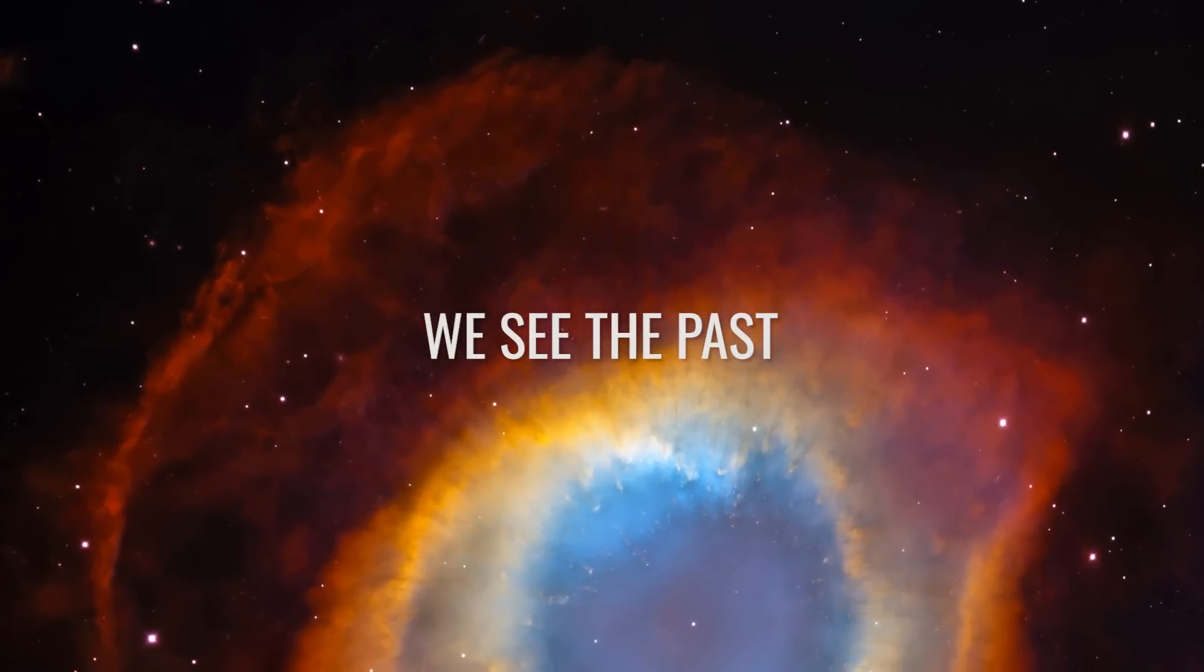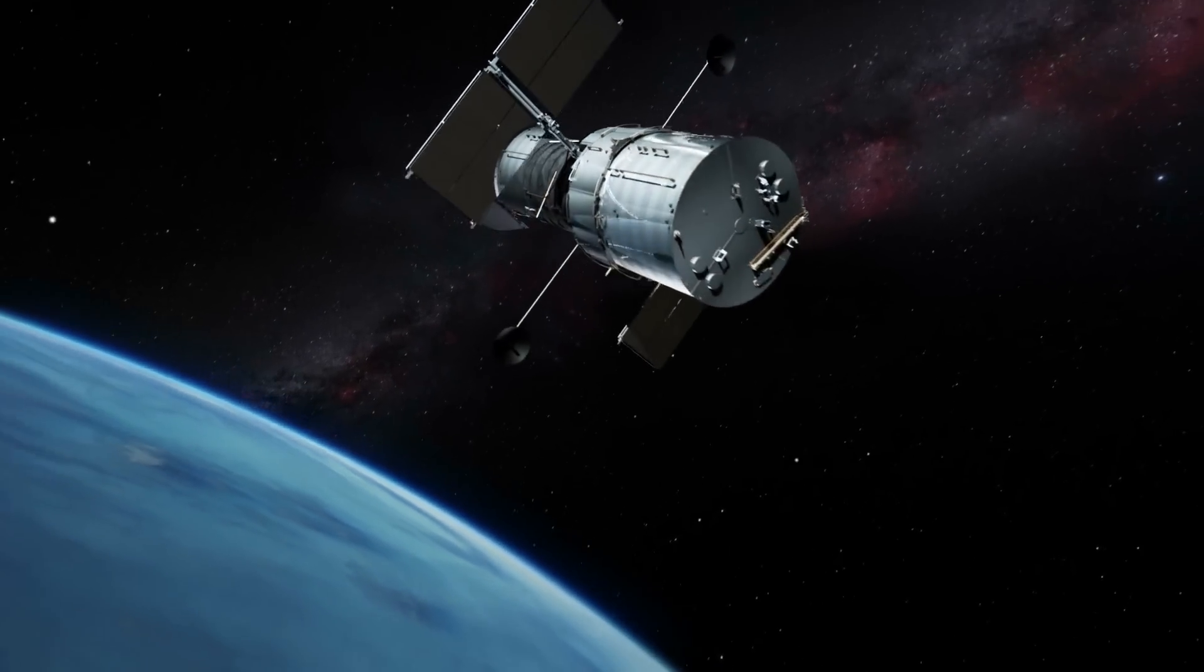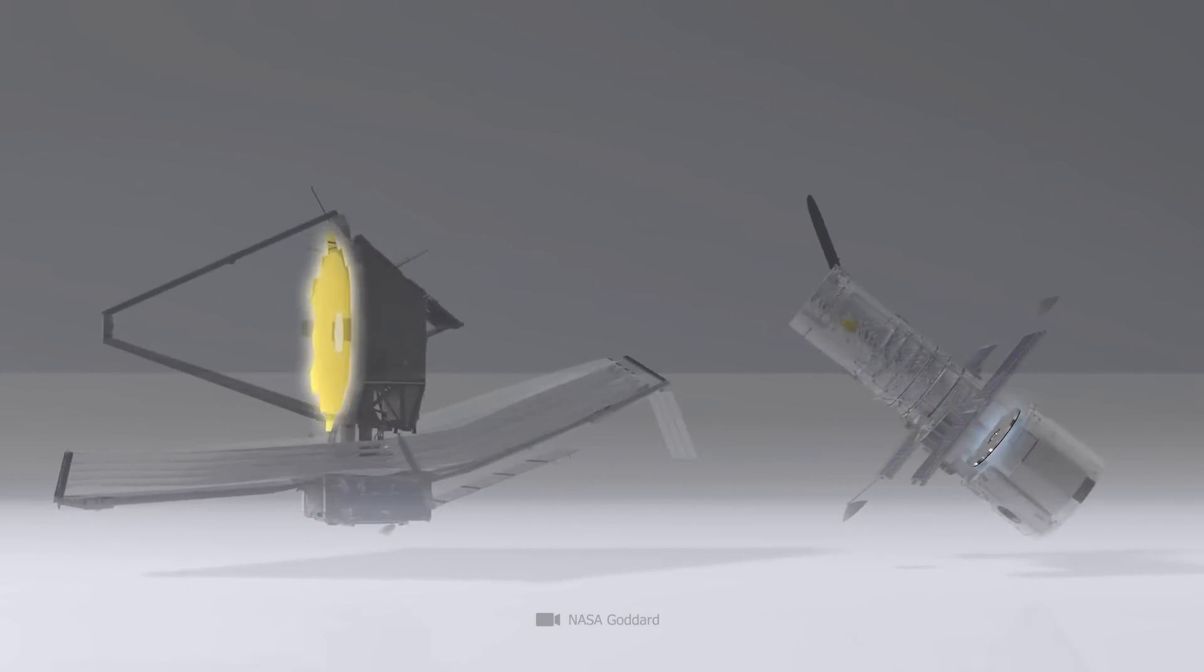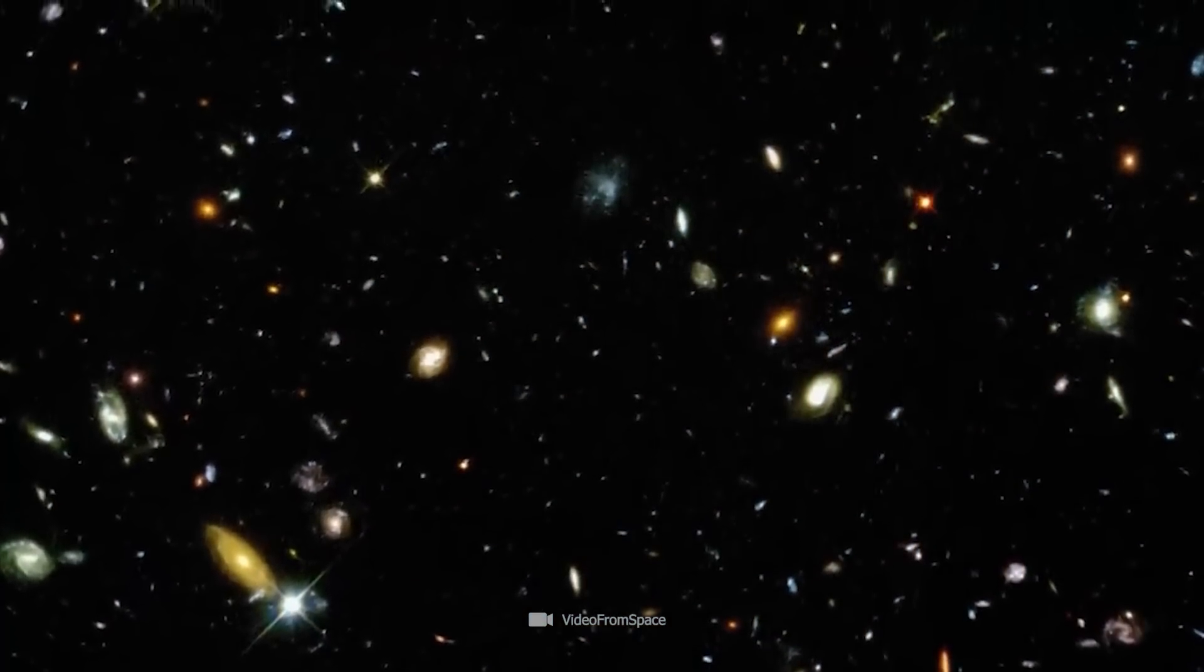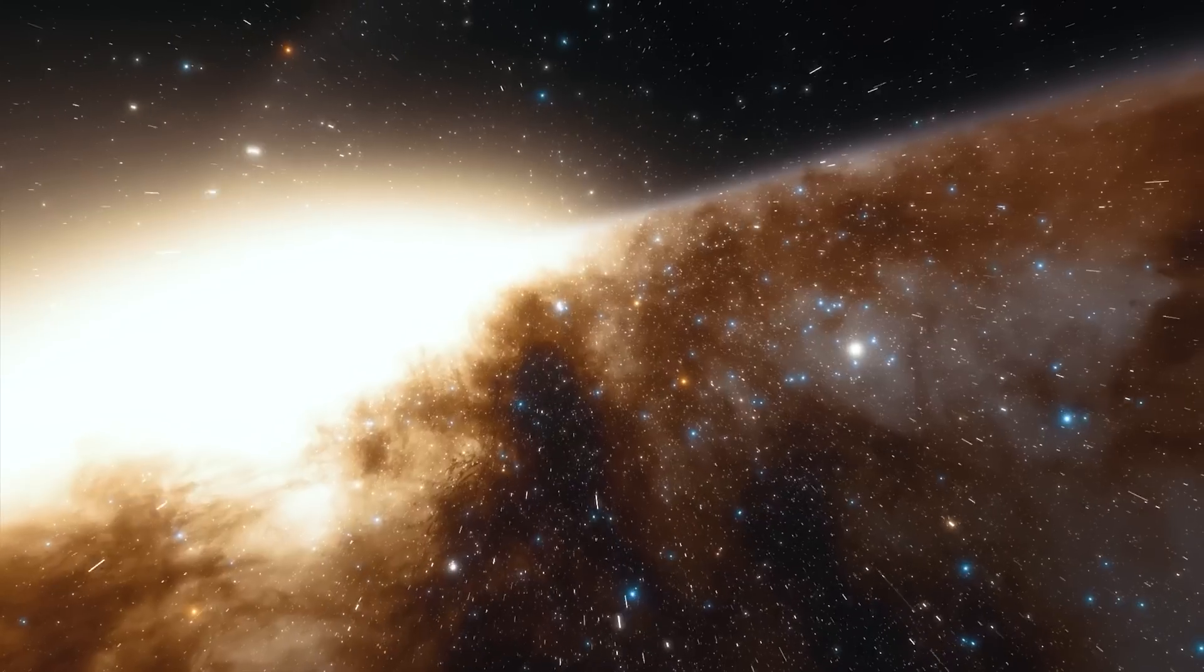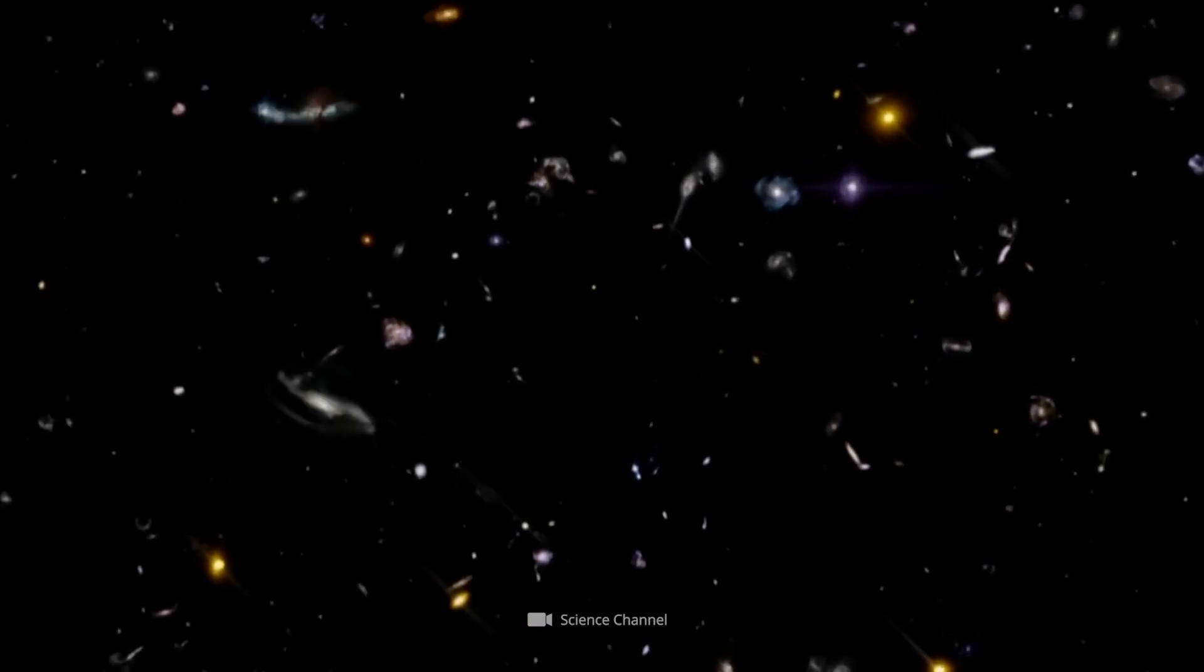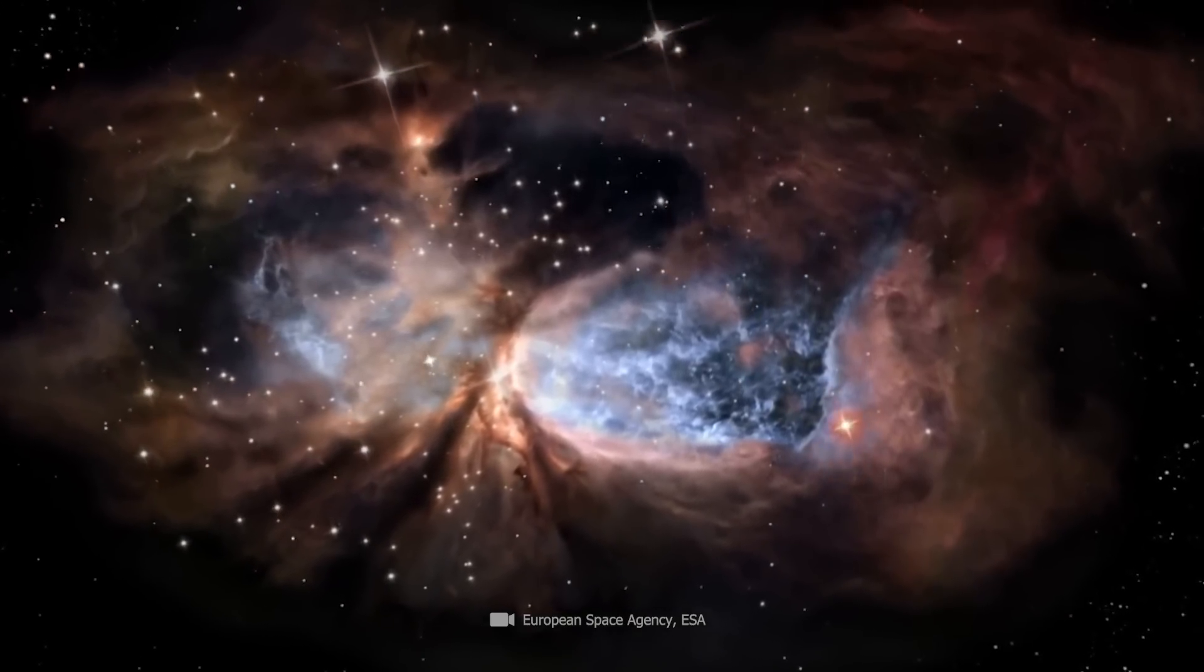We see the past. Telescopes are marvelous pieces of human technology. With giant mirrors, they catch light that has traveled billions of years through space. To look into space is to look into the past, since light does not travel infinitely fast and takes time to travel through space to reach us. That's why astronomers explain that we see this distant object as it was 300 million years ago, almost immediately after the Big Bang, when our universe supposedly came into being.